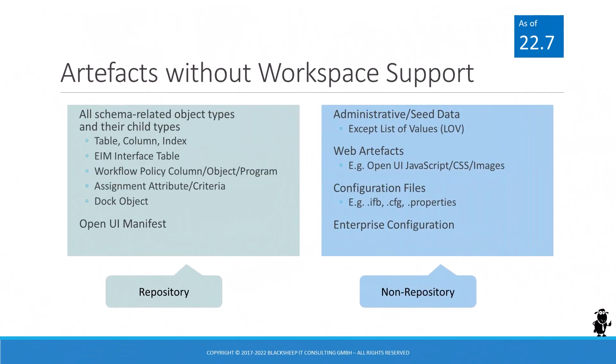If we look at the shrinking list of objects outside of workspaces, we can see that after an update to 22.7, only two areas of the repository are not supporting workspaces and therefore not supporting parallel development. The first area includes all schema-related object types and their child types, such as tables, EIM interface tables, workflow policy objects, assignment objects, and doc objects.